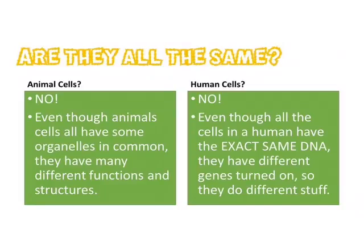One cell might have more mitochondria than another cell because it needs to make more energy. This is the same with human cells — every cell in your body is not exactly the same, even though it has exactly the same DNA. So even though your nerve cells look different from your blood cells, they have the same DNA inside of them. We're going to talk more about that later on.